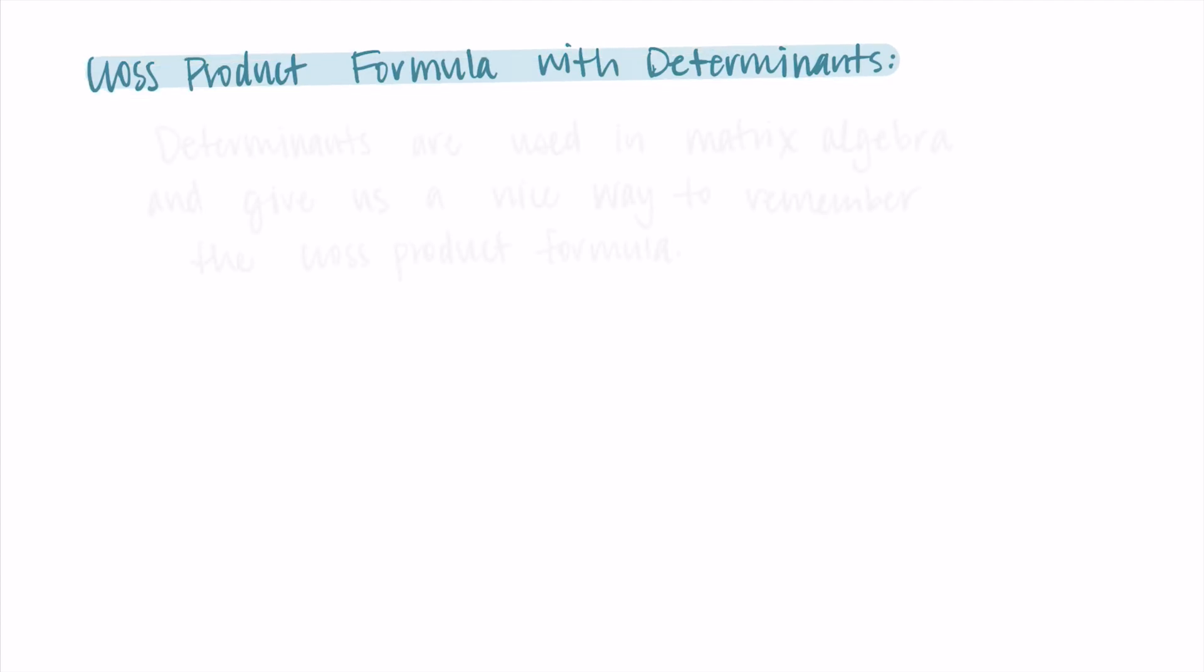All right, so the next thing we're going to talk about is how to do this formula instead with determinants. Let me talk about what a determinant is. And when you see it, I think you're going to agree that this is an easier way to remember that whole formula. Determinants are used in matrix algebra, also called linear algebra. And for here, they give us a nice way to remember the cross product formula.